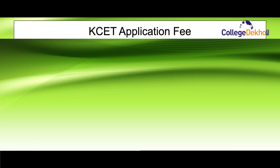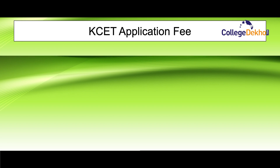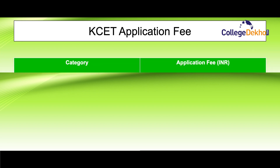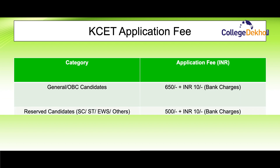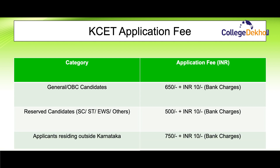The KCET application fee is divided into different categories. For general or OBC candidates, the application fee will be 650 rupees plus 10 rupees as bank charges. For reserved candidates such as SC, ST, EWS, and others, the application fee will be 500 rupees plus 10 rupees bank charges. For applicants who are not a domicile of Karnataka state, the application fee will be 750 rupees plus 10 rupees as bank charges.